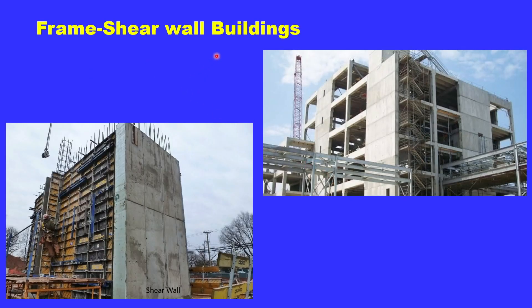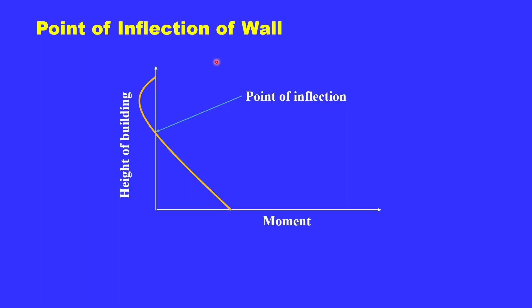A very important system is the frame-shear wall building — a combination of shear walls and frames. One side has shear walls and the other side has columns and beams forming a frame, all integrally built. This will be studied in more detail in coming videos, including the special behavior called frame-wall interaction, where the combined system changes curvature at some height, creating a point of inflection in the wall.